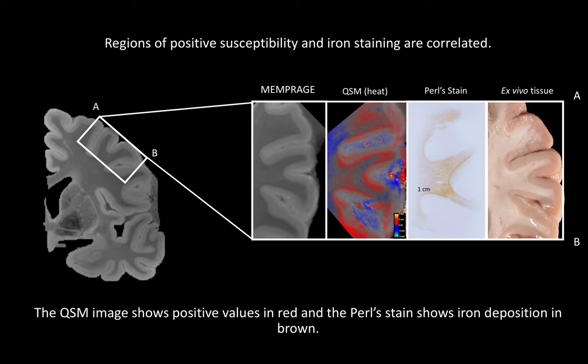We chose to validate our findings in another region than previous studies, that is the prefrontal cortex. Here we show the MRI data, QSM, iron-stained histology, and tissue block for that region. Areas of positive susceptibility in red are well correlated with iron stains in brown, particularly in the areas where black arrowheads indicate.